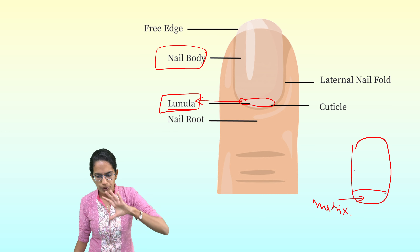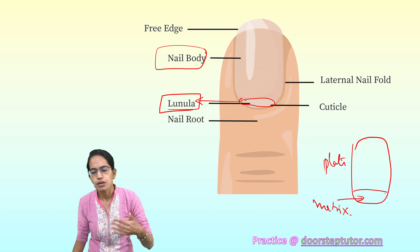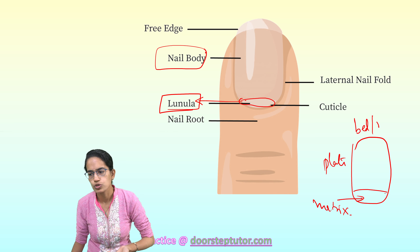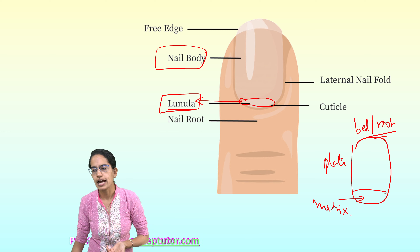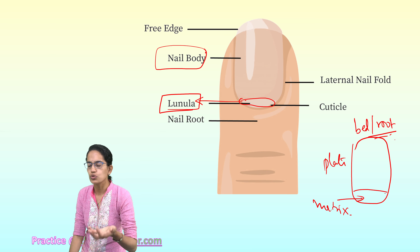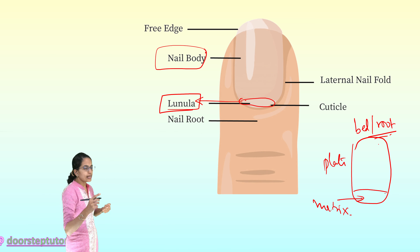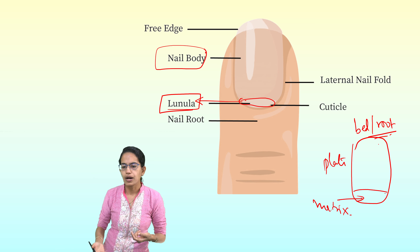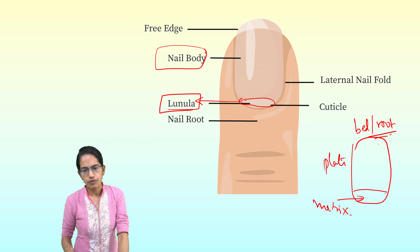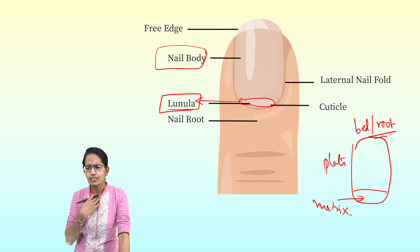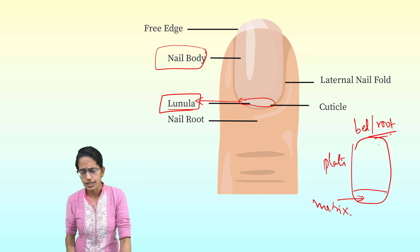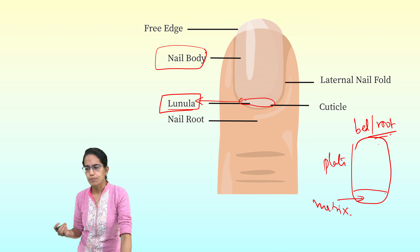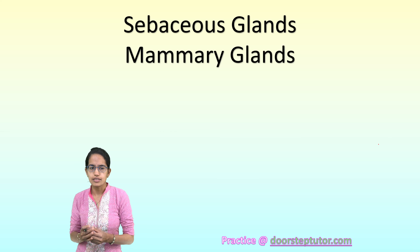To summarize the nail structure: the upper part is the nail plate; the lower part is the lunula or nail matrix. Below the nail plate is the nail bed, also known as the nail root, which connects to the nail plate. The nail root or nail bed is the living part; the plate is the non-living, keratinized, hard, and brittle part. The function of the nail is to provide protection to the fingers and toes.